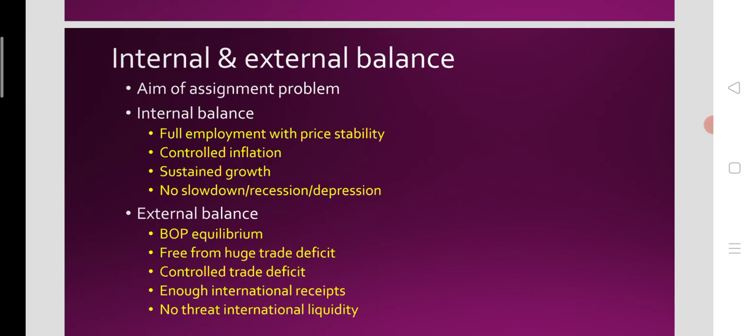Internal balance refers to full employment with price stability — the domestic economy is in stability with no inflation and no unemployment, no slowdown, no recession as seen today due to COVID-19 lockdowns. External balance refers to BOP equilibrium over a period of time, where the economy is free from huge trade deficits, international receipts are sufficient, and there is no threat of international liquidity problems.